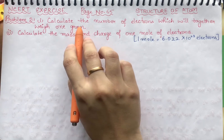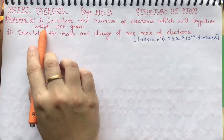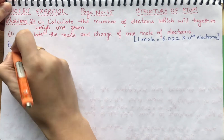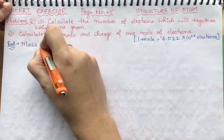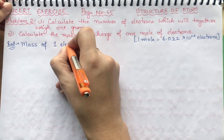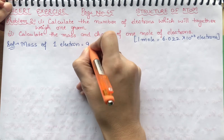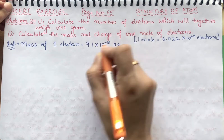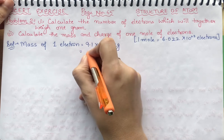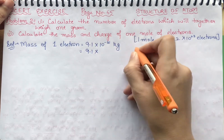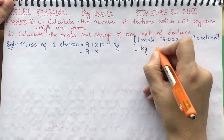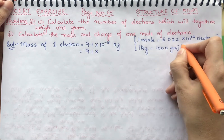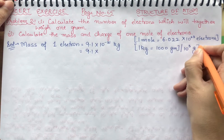Now let's calculate the number of electrons which will weigh together 1 gram. First, the mass of 1 electron is equal to 9.1 into 10 raised to the power minus 31 kg. We need to convert this to grams: 1 kg equals 1000 grams, so we multiply by 10 raised to power 3.